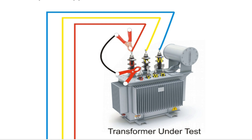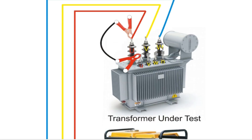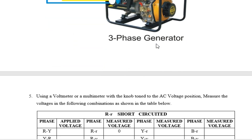If you connect to the low-voltage side, the transformer will step the voltage up, and the operator could be killed. For example, if this transformer is 11 kV / 400 V, putting the generator on the 11 kV side means you get a safe, minimal voltage on the low-voltage side. Putting it on the low-voltage side could give you 11,000 V output, which is very dangerous.